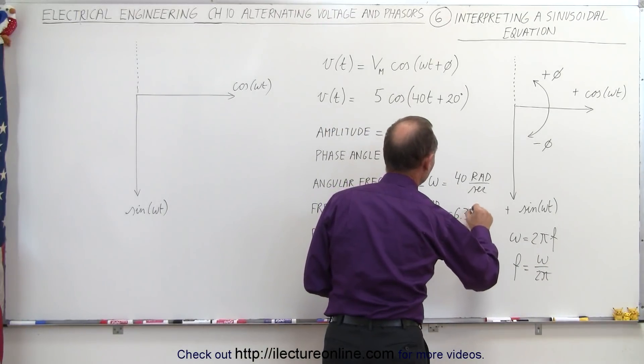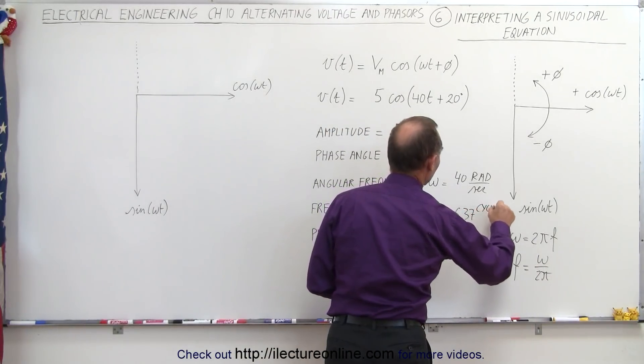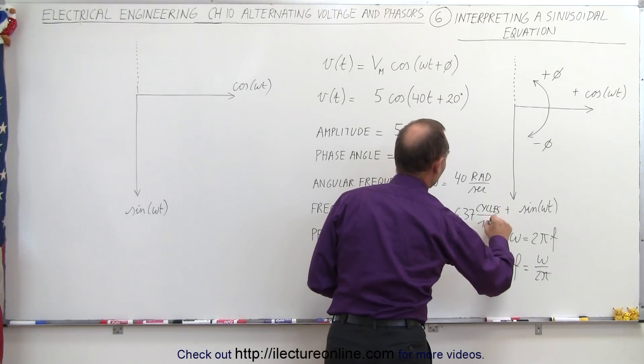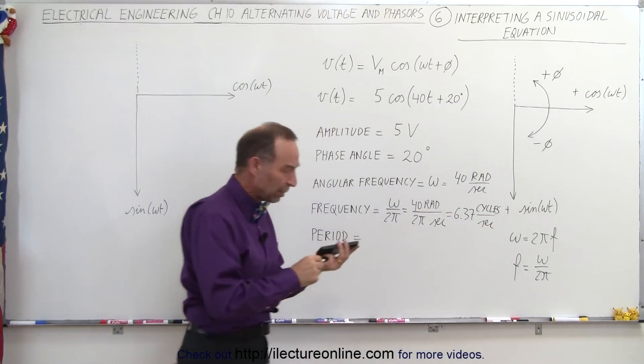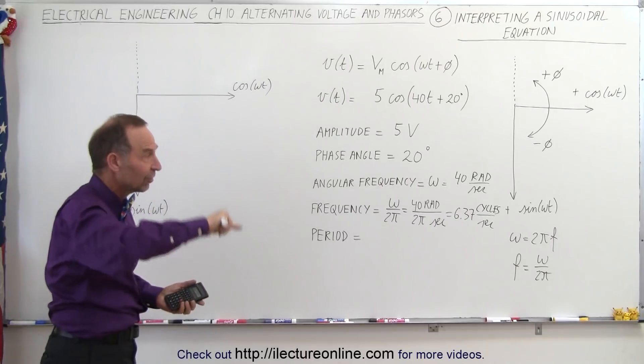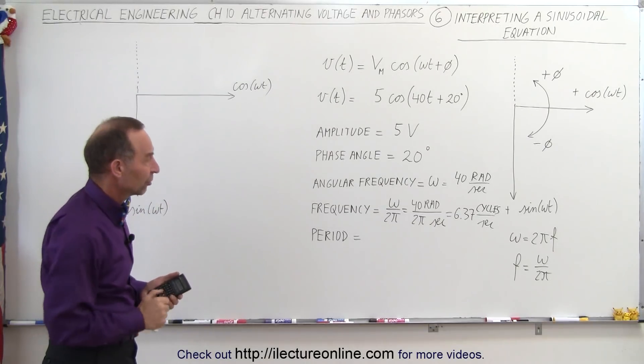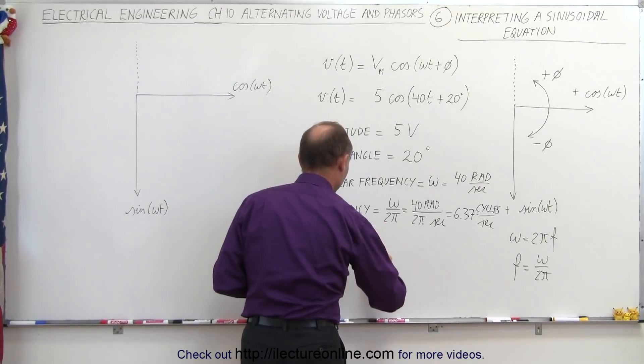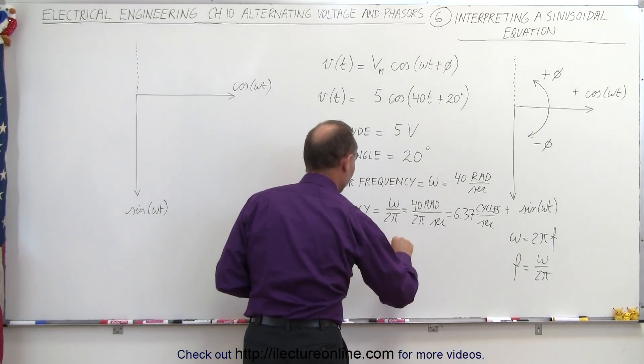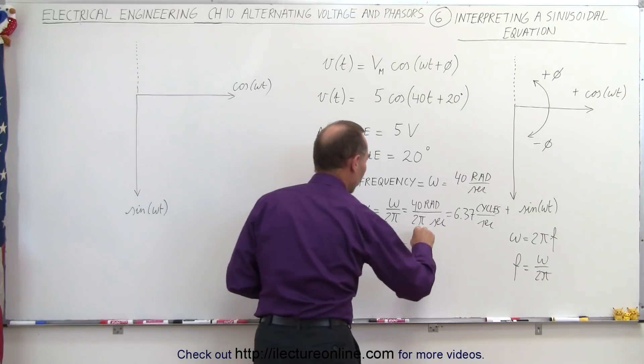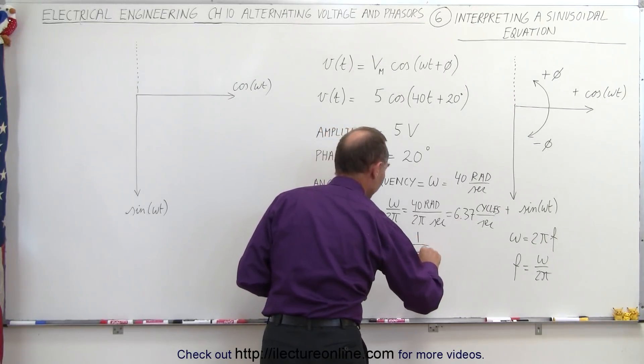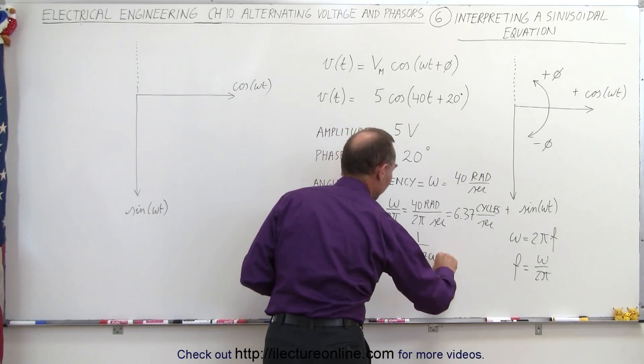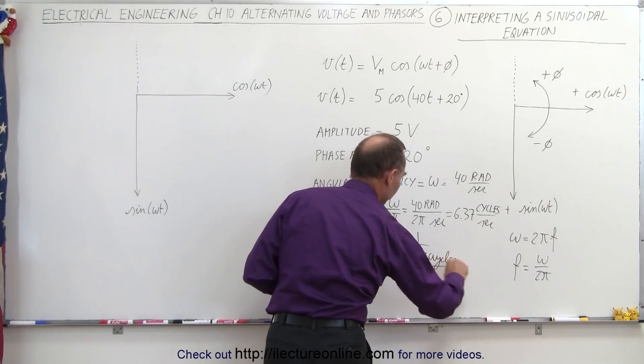So a cycle would be one complete cycle on the oscillatory function, and then finally the period, which is defined as 1 over the frequency, which in this case is equal to t, that would be equal to 1 divided by 6.37 cycles per second.